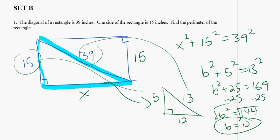So this missing side was 12. This side is 12. So 15 plus 15 plus 12 plus 12 is the perimeter. So the perimeter equals 54.